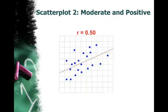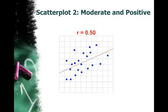If you have a moderate and positive relationship, the points are still close to one another, but they're a little bit further from the line. There's a little bit more space from one another and from the line. Again, it's positive because it's going from the left to the upper right, and it's moderate because these points are further from the line.